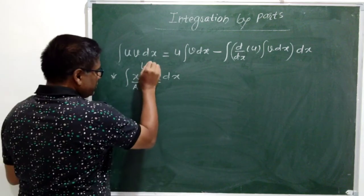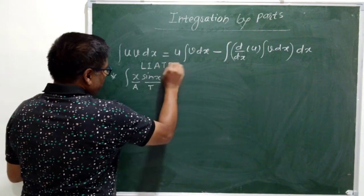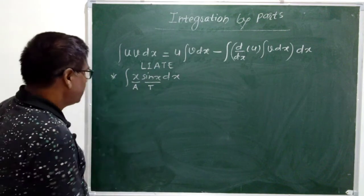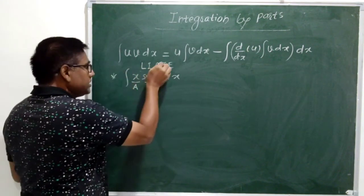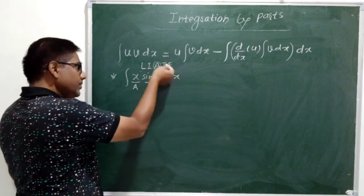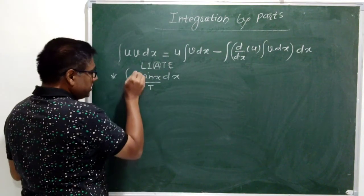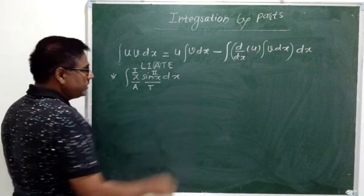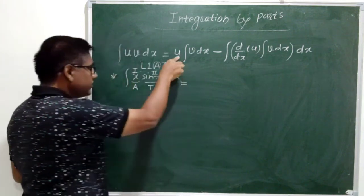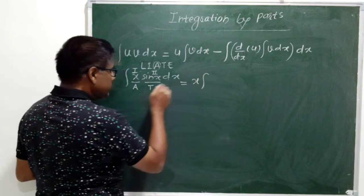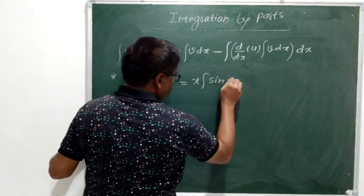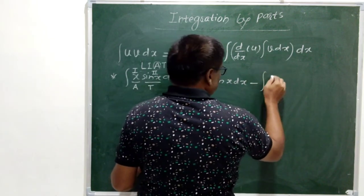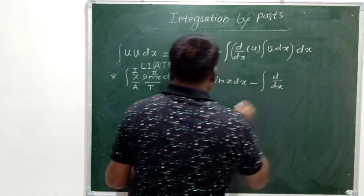Therefore, as per the LIATE rule, the first preference should be given to which function — algebraic or trigonometric? In this sequence we get algebraic before trigonometric. Therefore this algebraic function x should be treated as the first function and sin(x) should be treated as the second function. This equals first function x into integration of second function sin(x) dx, minus under integral derivative of first (d/dx of x).